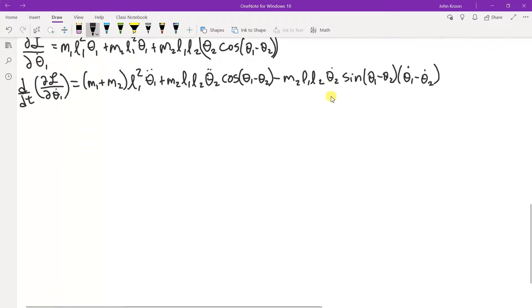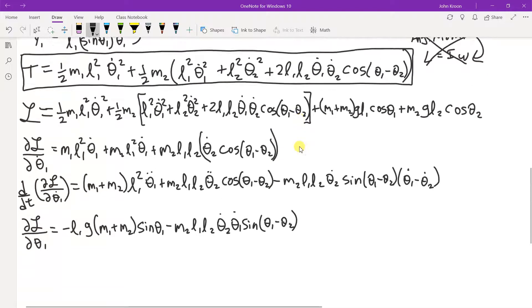So we have DL D theta 1, and that equals minus L1 G M1 plus M2 sin theta 1, minus M2 L1 L2 theta 1 dot theta 2 dot sin theta 1 minus theta 2. Yeah, that's correct.